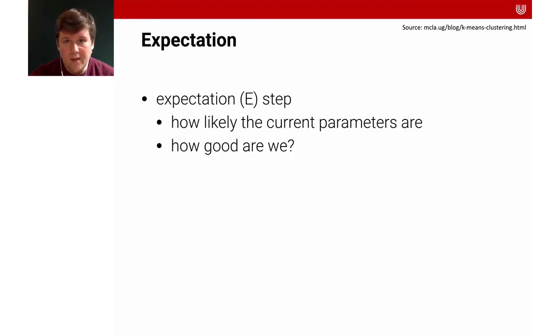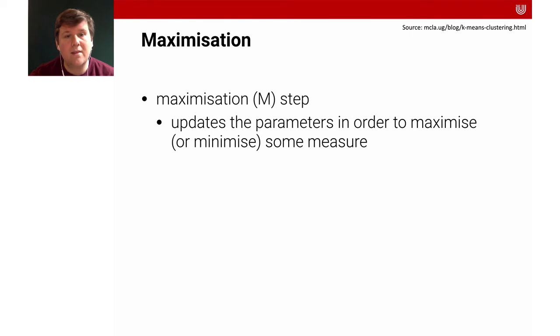And we have these two steps when we are training a k-means model. We have an expectation step and a maximization step. So in the expectation step we compute how likely the current parameters are, and in a way that's answering the question of how good we are. In the maximization step, the goal is to update the parameters in order to maximize or to minimize some measure.